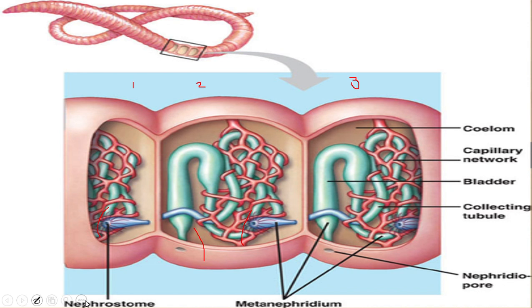The excretion starts from an opening called the nephrostome. You can see that the nephrostome is surrounded by a tuft of cilia. These cilia were also present in planaria in the flame cell, and they perform the same function in both organisms. The cilia help water along with metabolic waste to enter into the tube through the opening called the nephrostome.